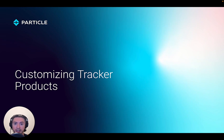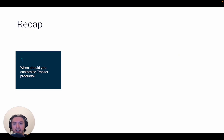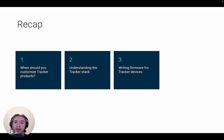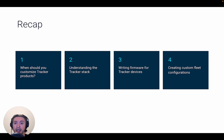We covered a lot of topics in this series, so let's do a quick recap. We first went over common use cases that require customization, like needing external sensor data or custom fleet configurations. Then we went into the details of the Tracker stack and how the combination of hardware, firmware, and cloud services work together to make up the product. We also reviewed how to set up your local copy of Tracker Edge and a couple of useful development tips, like adding to the location publish. Lastly, we went over the details of our configuration engine and how you can create custom settings and use them in your firmware. This should give you a solid foundation to start working on your own products. Please visit our documentation website at docs.particle.io for the full reference API, tutorials, and examples. We'll see you next time — thanks for watching.